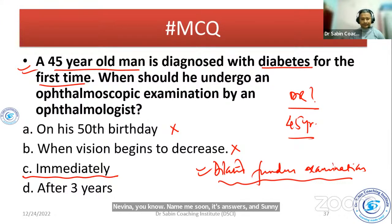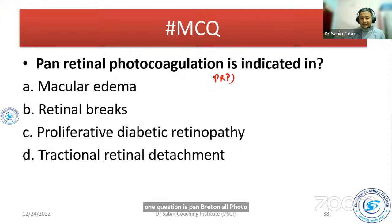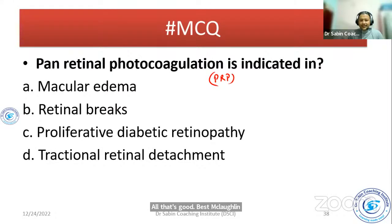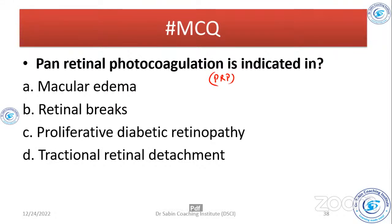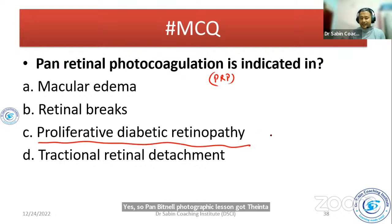Another question: panretinal photocoagulation, PRP, is indicated in which condition? The options include macular edema, proliferative diabetic retinopathy, and tractional retinal detachment. The best answer is proliferative diabetic retinopathy. Panretinal photocoagulation is indicated in proliferative diabetic retinopathy.